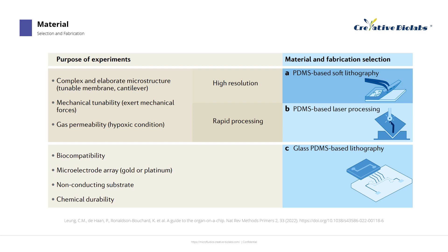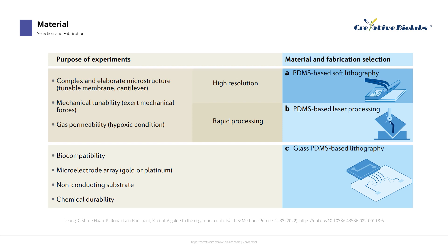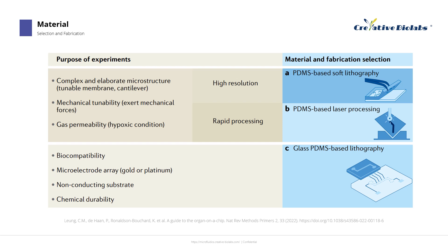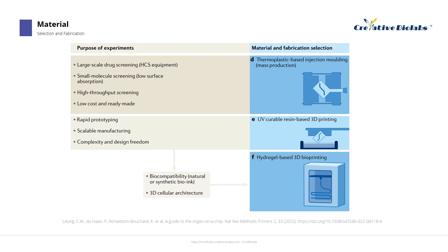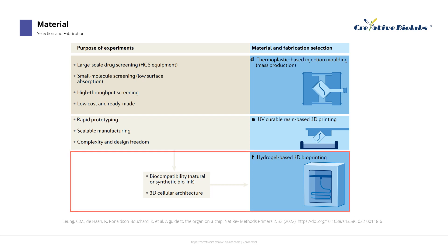OOC technology has reached a point where efficient manufacturing methods can be adopted through material selection based on experimental purposes, as shown in the figure. With biological compatibility and tunable mechanical properties, PDMS is fabricated using soft lithography to develop elaborate microstructures, or 3D rapid prototyping by laser processing, or integrated device fabrication with a gold or platinum deposited substrate such as an electrode array. For large-scale experiments such as high-throughput screening, plastic-based injection molding could be selected. For rapid prototyping with a high degree of design freedom, resin-based or hydrogel-based 3D printing is available.